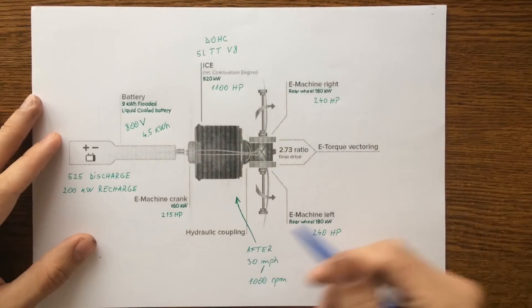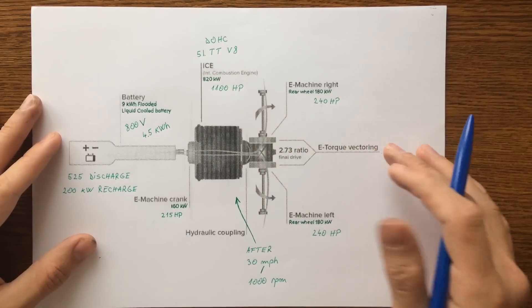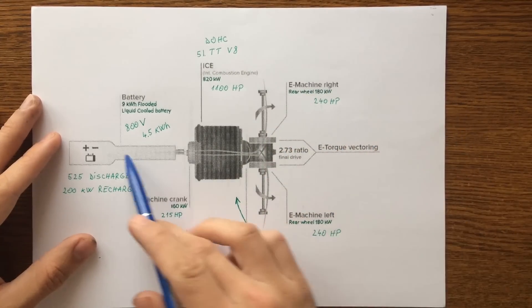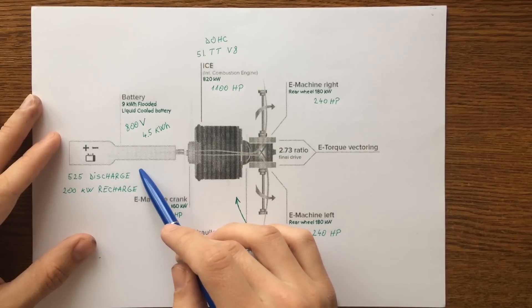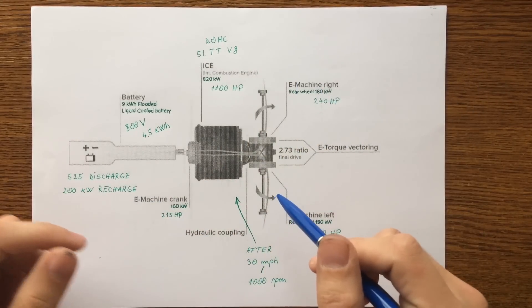So here you have mainly the back of the vehicle which is composed by a battery which is placed in the middle of the car between the driver and the passenger seat.